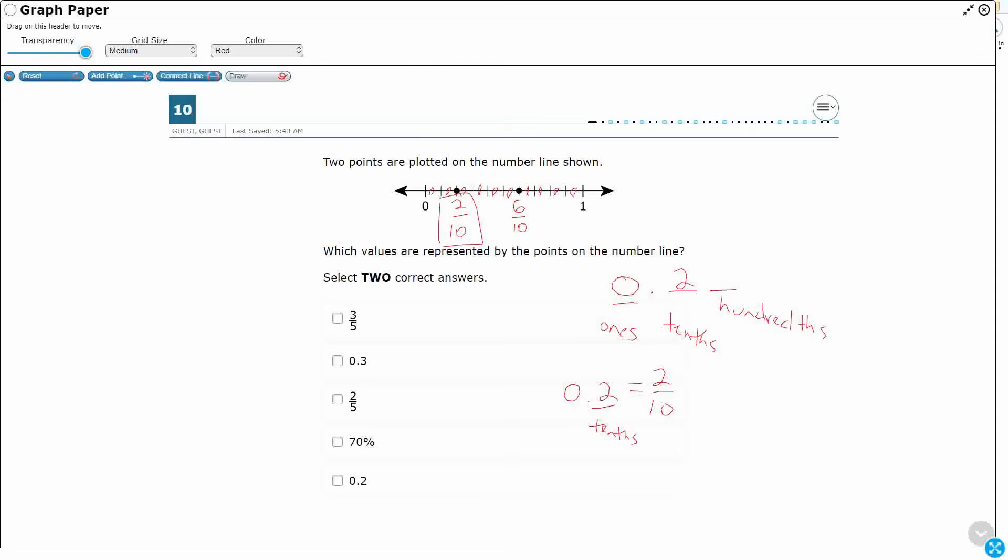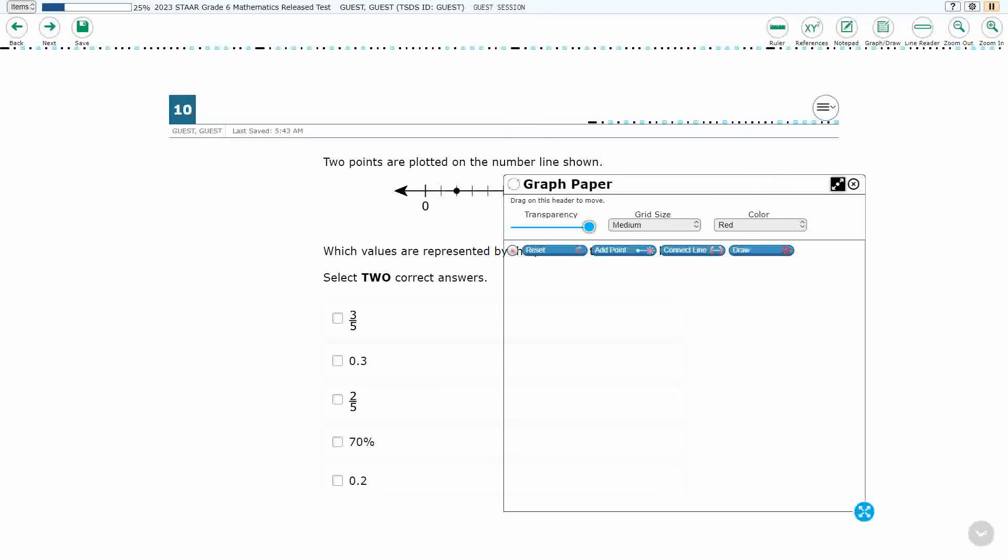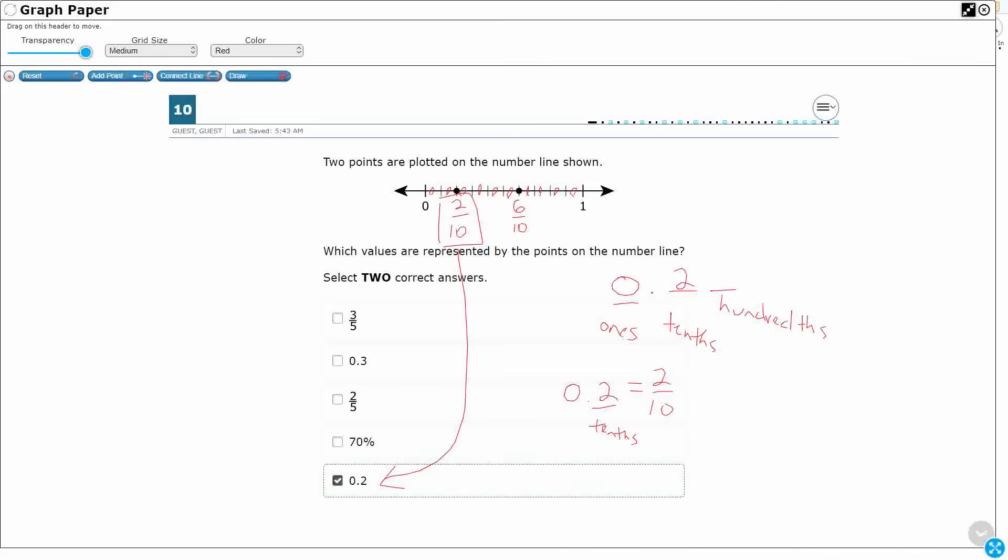We've been working on this since fourth grade. So if I see 2 over 10, I should immediately think, okay, 0.2. So let's go ahead and mark that one off. That's one of them. I need to find the other one.